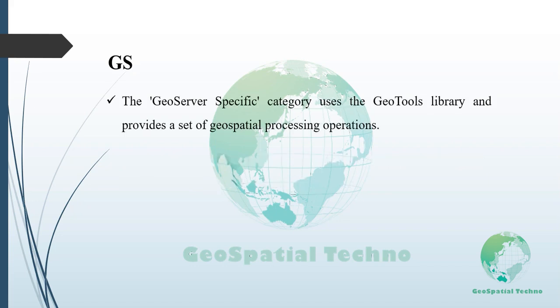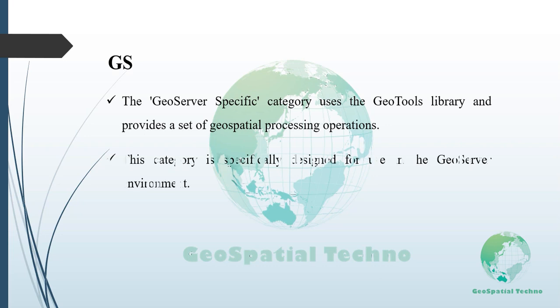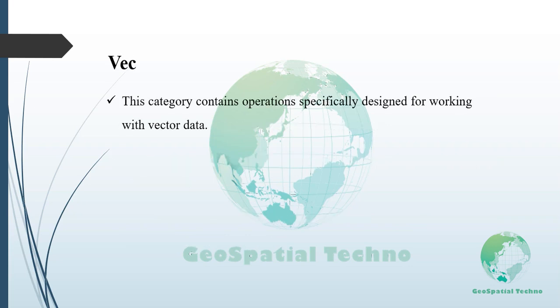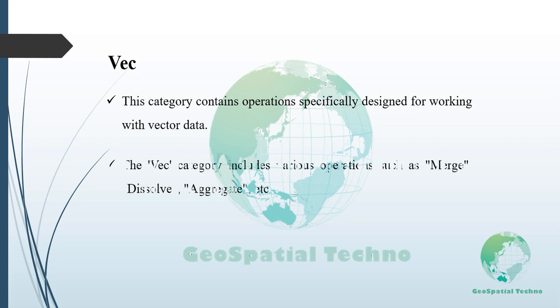The GS, or GeoServer-specific, category uses the GeoTools library and provides a set of geospatial processing operations specifically designed for use in the GeoServer environment. Some common functions include Feature Count, Centroid, and Buffer Feature Collection. The WEC category contains operations specifically designed for working with vector data such as Merge, Dissolve, and Aggregate.